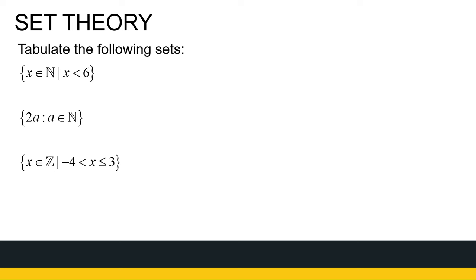Let's look at some sets. Tabulate the following sets — they're given in set builder notation in some different ways of writing, just to get you used to it. If you had to tabulate all the natural numbers given they're less than six, that's 1, 2, 3, 4, and 5.